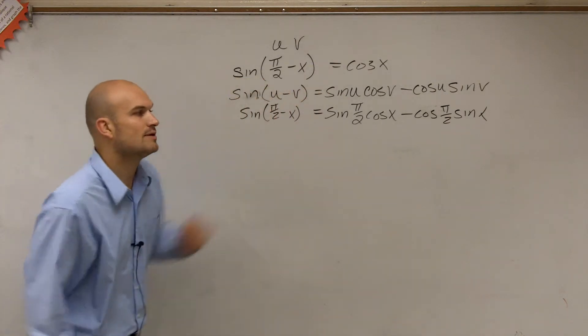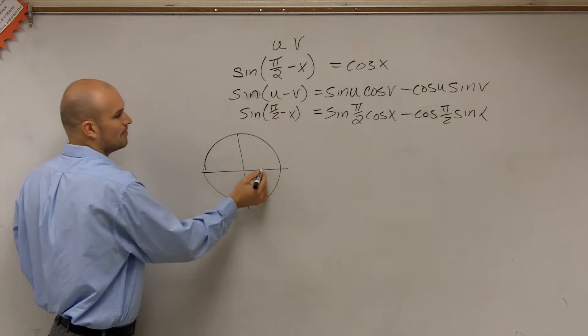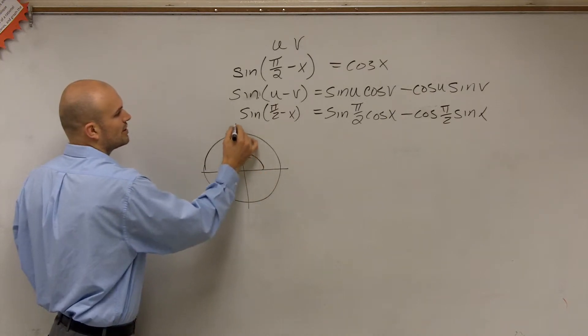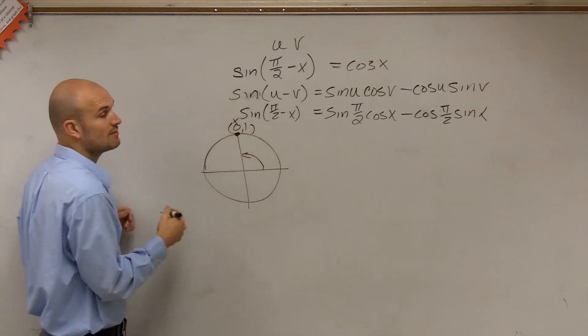Now we need to evaluate the sine of π/2. Well, π/2 is right here, which is a coordinate point of 0 comma 1, where cosine represents the x coordinate and the 1 represents the y coordinate.